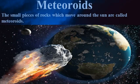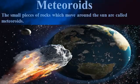Meteoroids: apart from the asteroids, there are small pieces of rocks that move around the Sun — they are called meteoroids. Sometimes these meteoroids come near the Earth and tend to drop upon it. During this process, due to friction with the air, they get heated up and burn. This causes a flash of light and falls on the Earth, creating a hollow.